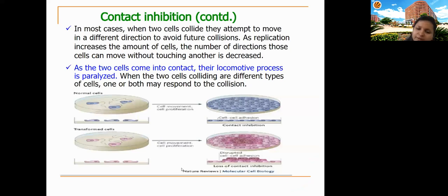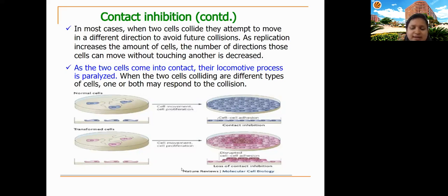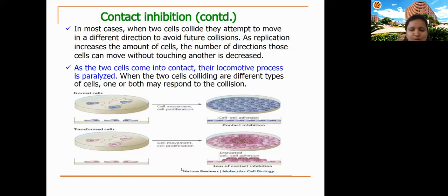Contact inhibition is the process by which cells that collide with each other move apart when there are free spaces. But when cell numbers increase to the point where no free spaces remain, cells come into contact and their locomotive process is paralyzed — this is contact inhibition. It is a protective mechanism ensuring resources are not wasted and tissues like skin do not overgrow.